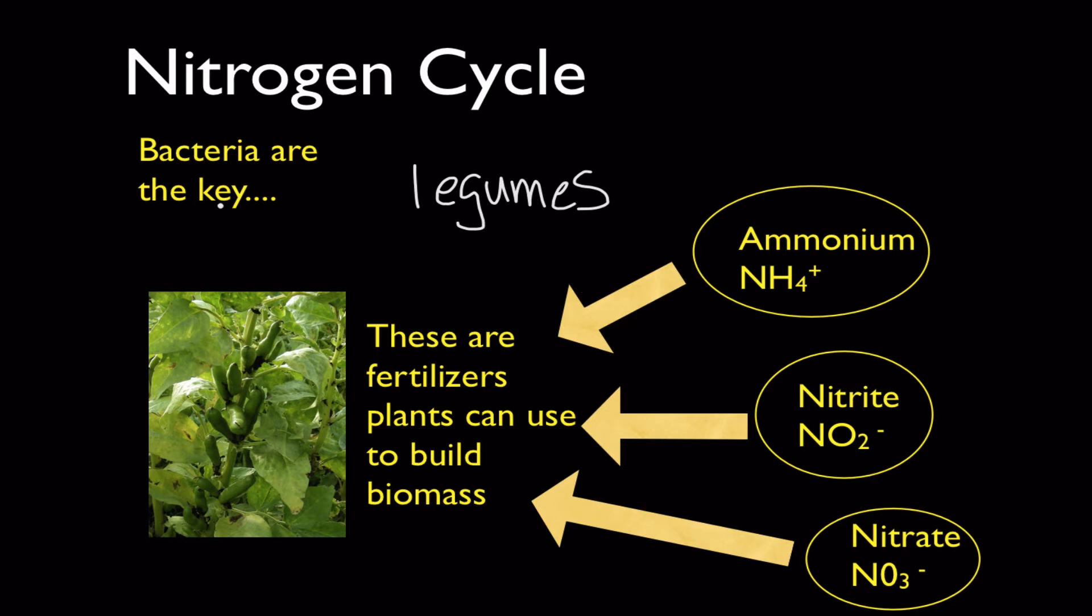Legumes have the ability to take care of these nitrogen fixing bacteria in their tissues. And what these nitrogen fixing bacteria are able to do for these special plants is convert atmospheric nitrogen into forms, ammonia, nitrites, and nitrates, that plants can use as fertilizer to build their tissues or build their biomass. So these are really special plants and they're very useful to farmers and to agriculture in general.